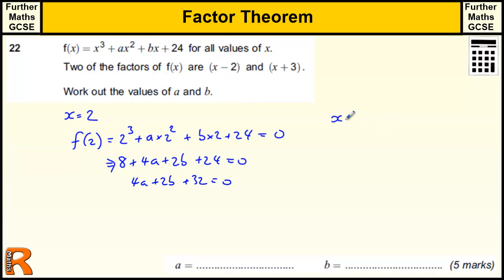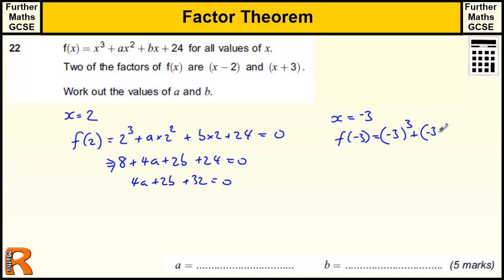The other factor is where x equals minus 3; that makes the bracket 0. So f of minus 3 is also equal to 0. So we get minus 3 cubed, plus minus 3 squared times a, plus minus 3 lots of b, plus 24, and that's also equal to 0.